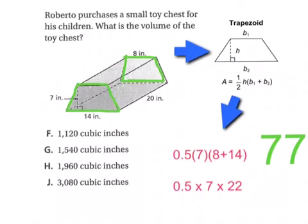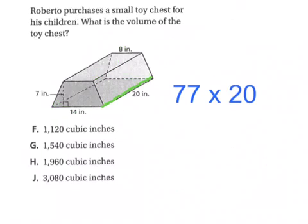Now to find its volume, what you then need to do is once you find the area of one of the trapezoids, you then take your area, 77, and multiply it by the distance that your bases are apart, which is 20. Remember, the distance or height of a three-dimensional shape is the distance between your two bases.